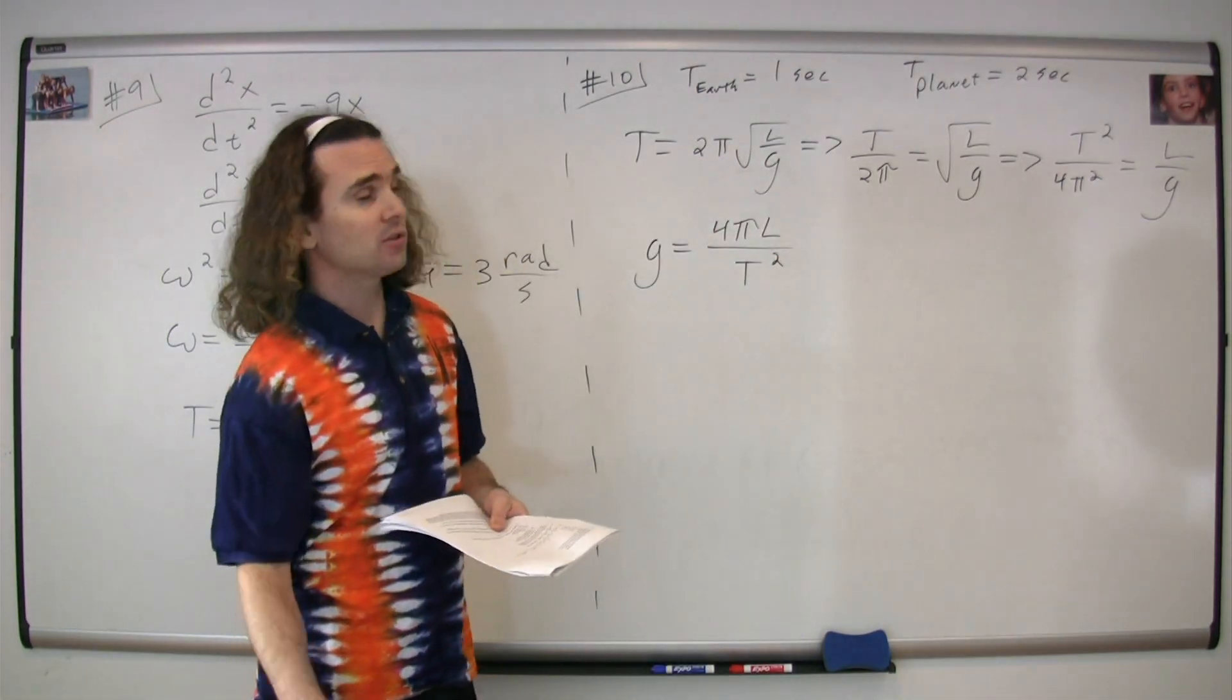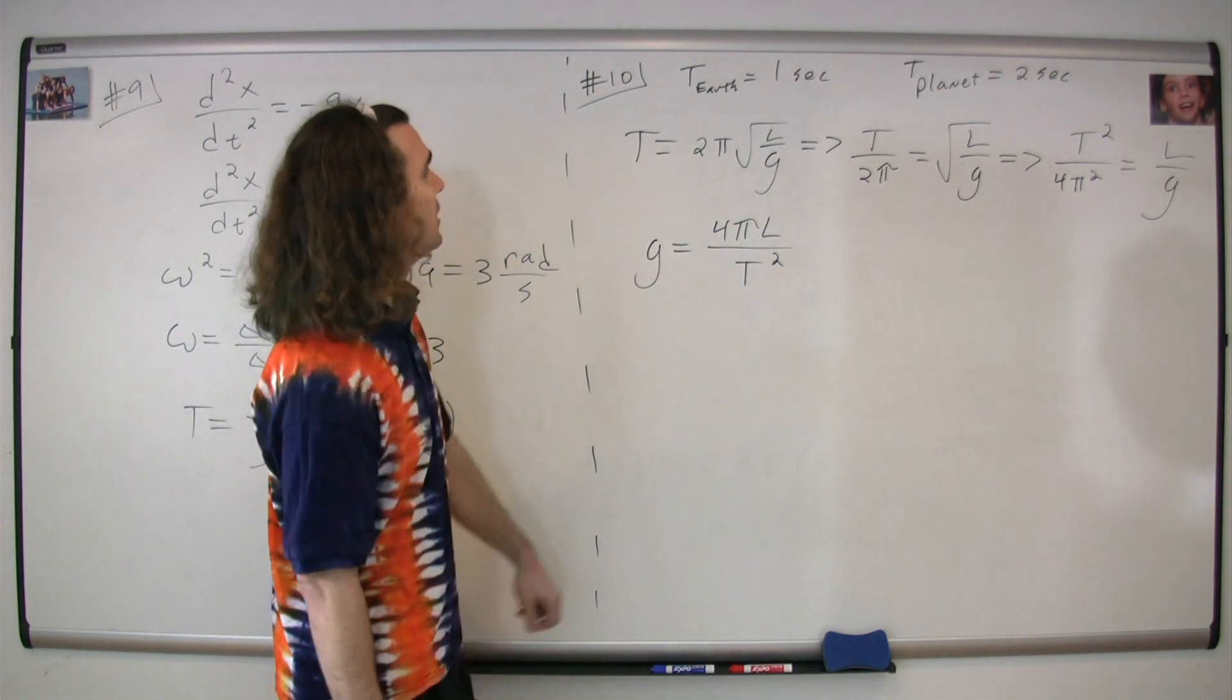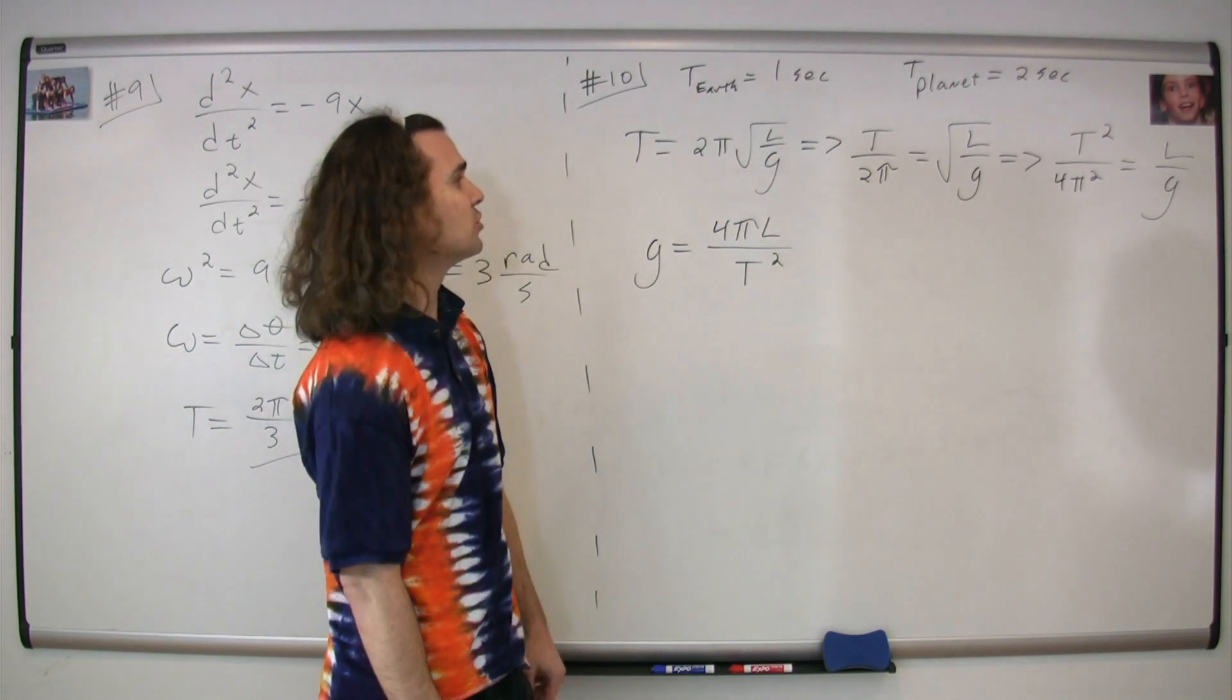They're asking for the acceleration due to gravity, so let's solve the period equation for g. Divide both sides by 2π, you get T divided by 2π equals the square root of L over g.